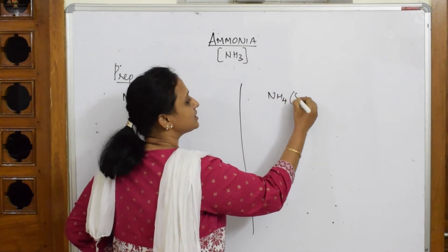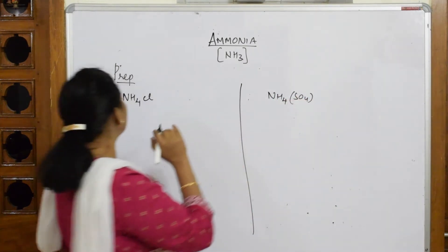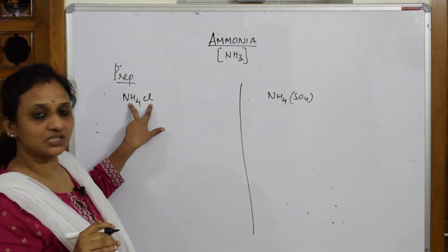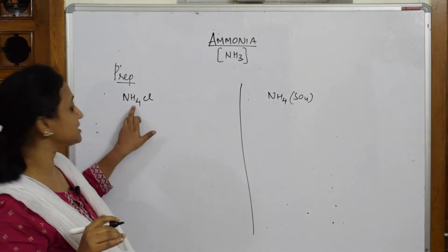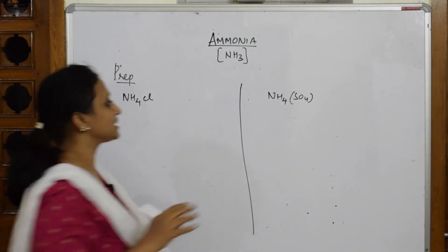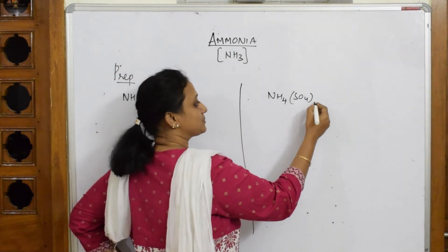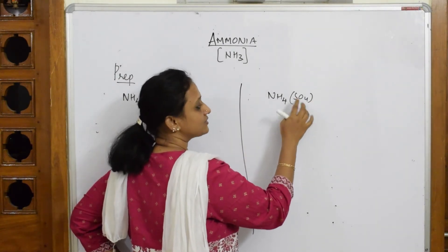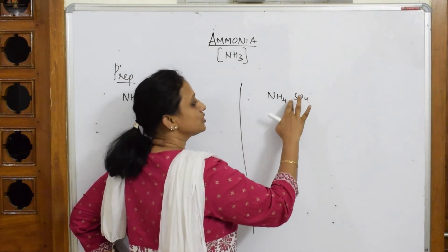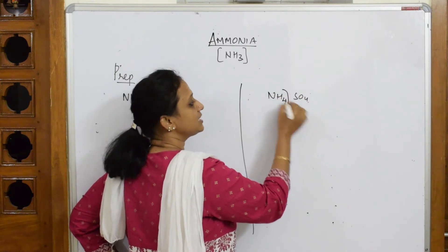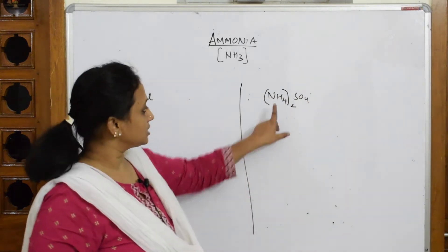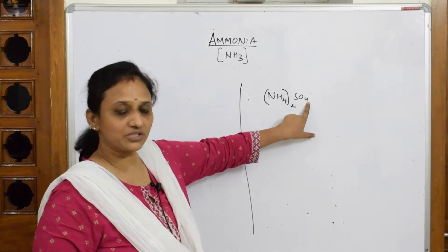Here ammonium valency is +1, so no charge here. Chloride valency is -1, so formula is correct. Here ammonium valency is +1, nothing to write. Sulfate valency is +2, so NH4 taken twice for ammonium sulfate.